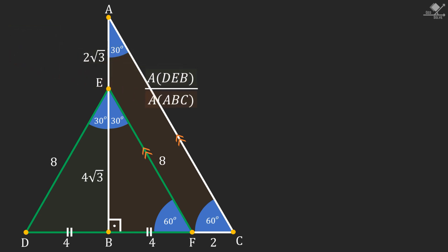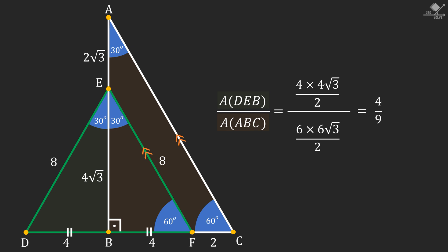Now we can find the areas of the triangles as follows. And that will give us the ratio of 4 over 9, which will be our answer.